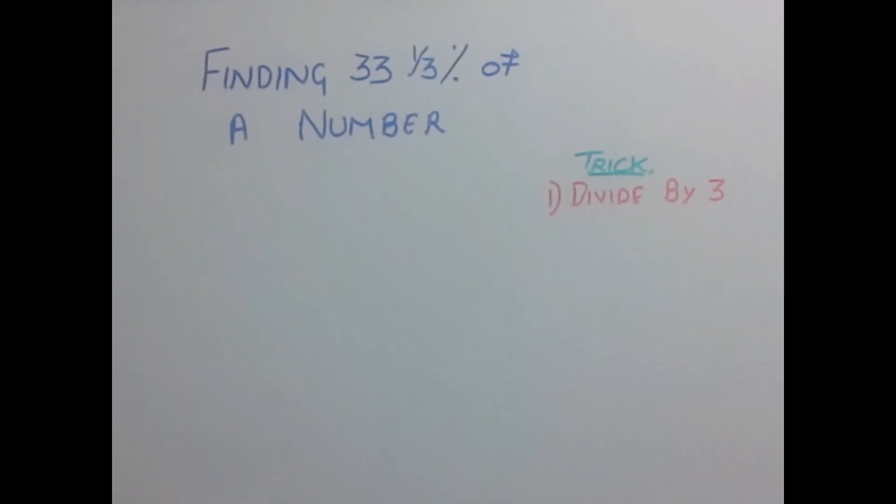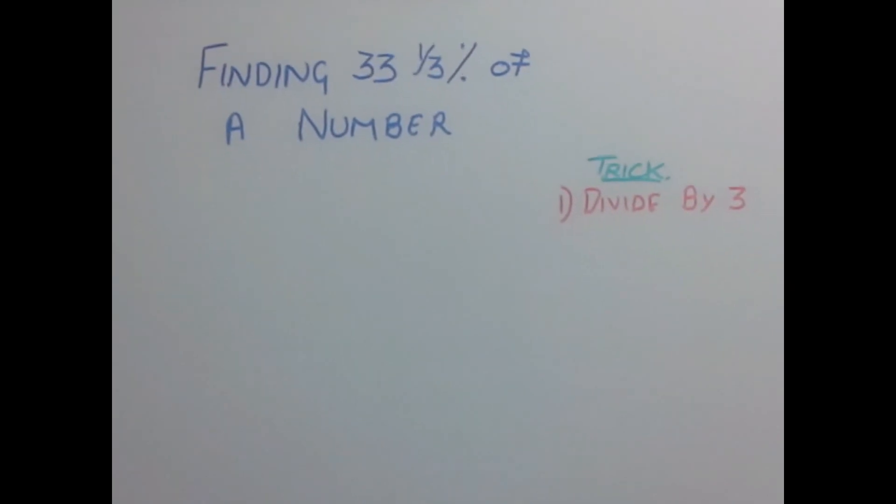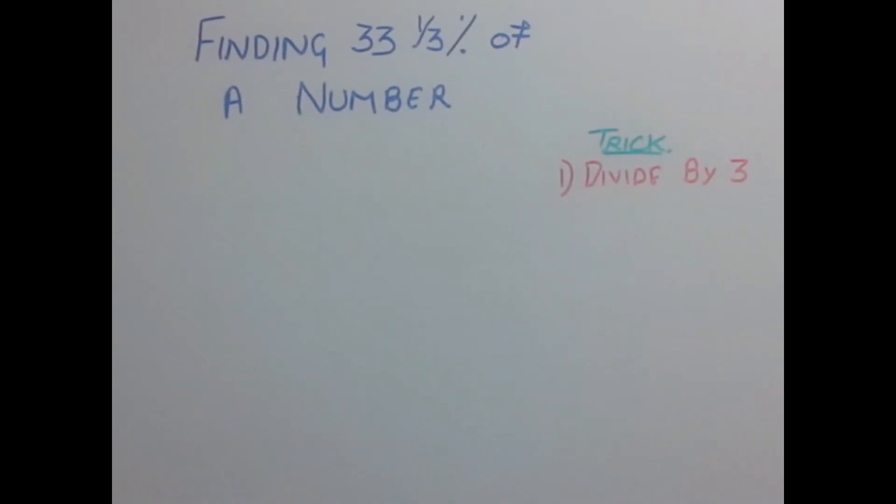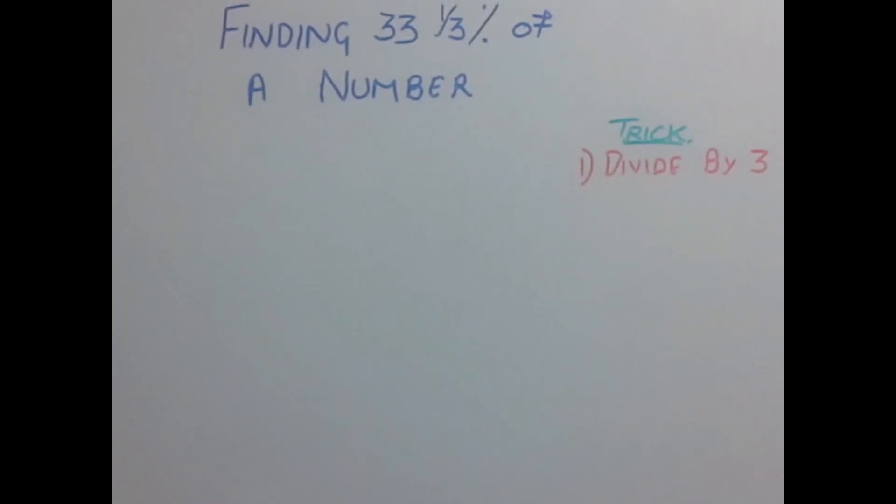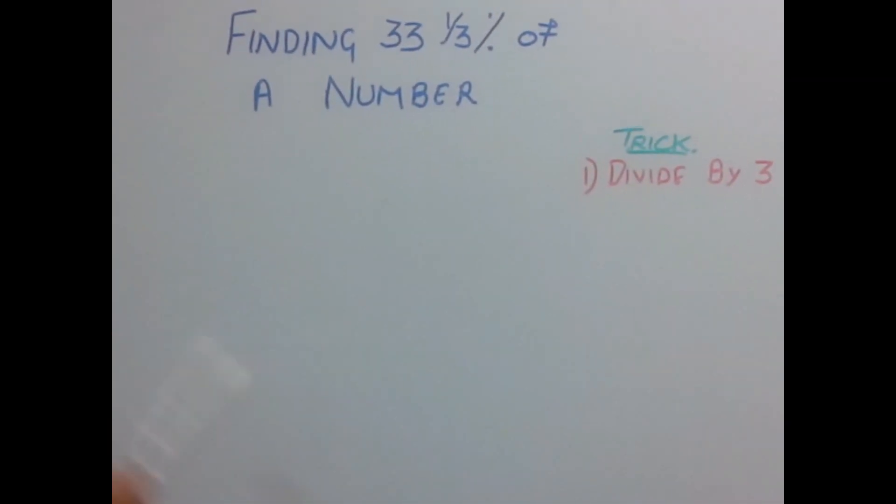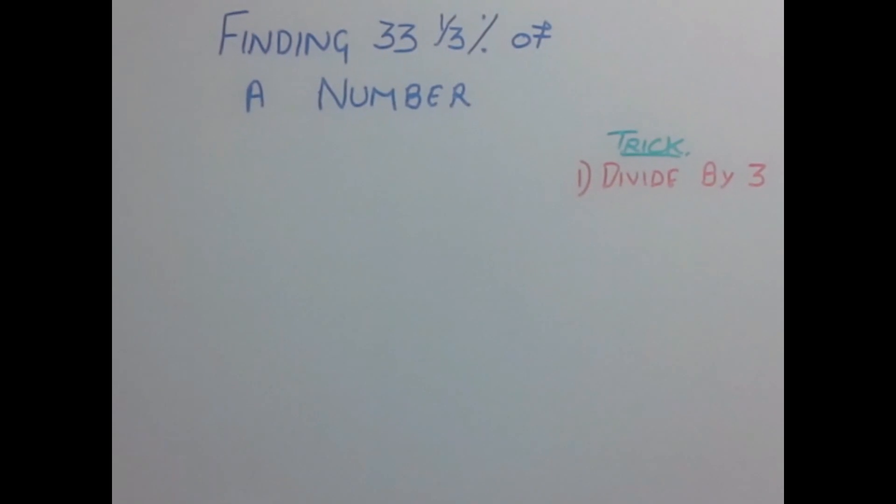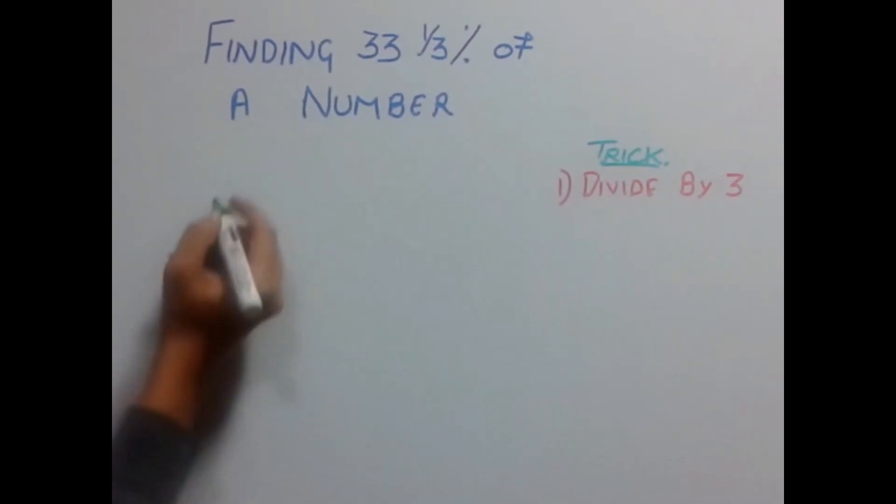Hi, welcome back. Today we'll be discussing our next trick: finding 33⅓% of any number. You must be thinking this is very complicated and tricky to find out, but believe me, it's not. For finding 33⅓% of any number, you just need to divide that number by 3 and you will have your answer. Let's do it.